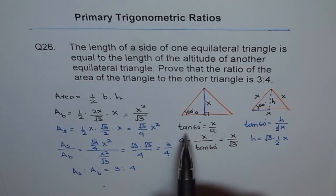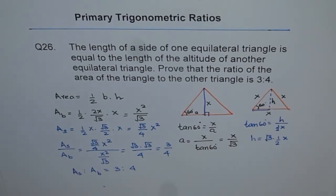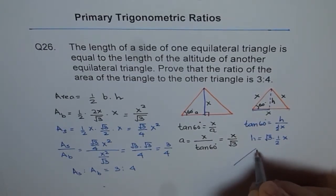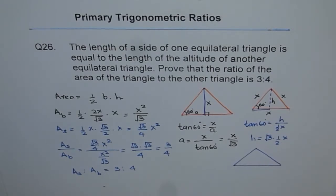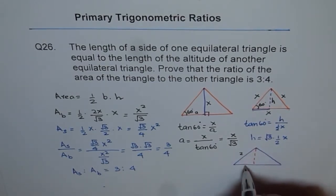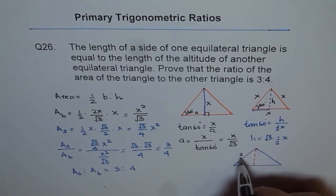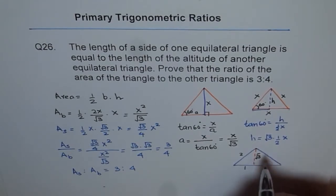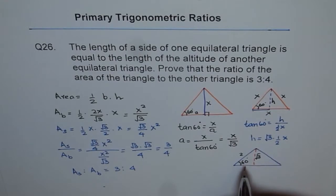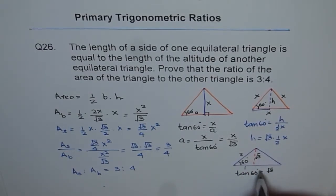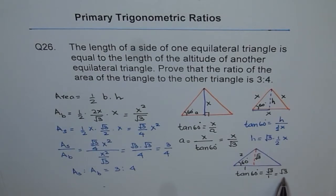For those who don't know why tan 60 equals square root of 3, let's consider this special 30-60-90 triangle as a reminder. Take an equilateral triangle whose sides are 2. Half the base is 1, and the height is the square root of 2² minus 1², which is square root of 3. In an equilateral triangle angles are 60 degrees each, so tan 60 equals square root of 3 over 1, which is square root of 3. Using exact values helps us get an exact answer rather than an approximate decimal answer.